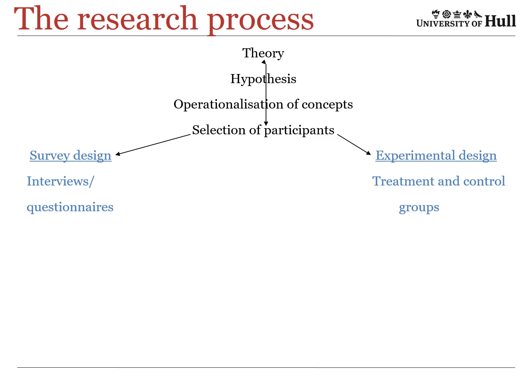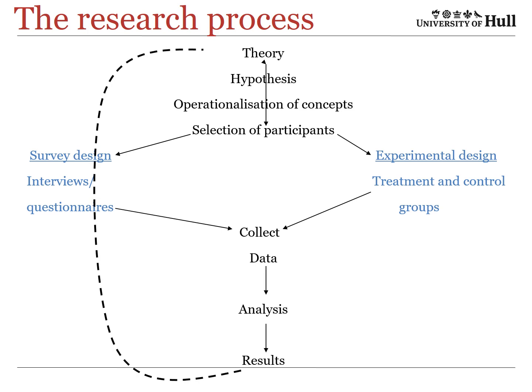In survey designs we can use interviews or questionnaires. In experimental designs we use treatment versus control groups. Both of these generate data which we can then analyse to produce results, which can feed back to inform us on whether our theory was correct or not. That's a very simple and quick way of looking at that process, and it isn't always as easy to do.